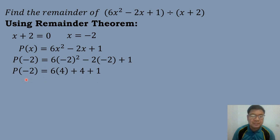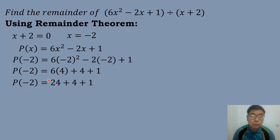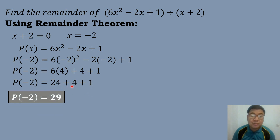So we have P of negative 2 equals 6 times negative 2 to the second power, minus 2 times negative 2, plus 1. Simplifying: negative 2 times negative 2 equals positive 4, so we have 6 times 4, which is 24, plus 4, plus 1. So 24 plus 4 plus 1 is equal to 29. So P of negative 2 is equal to 29, and this will be the value of our remainder.